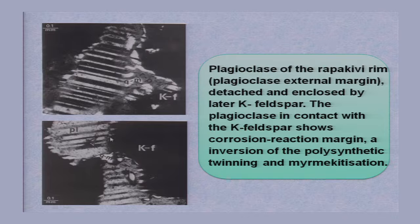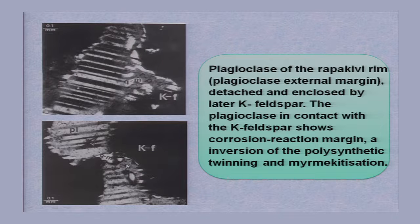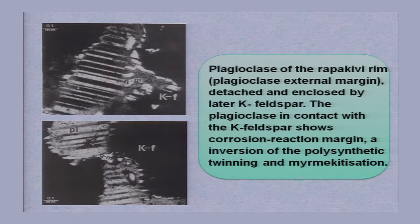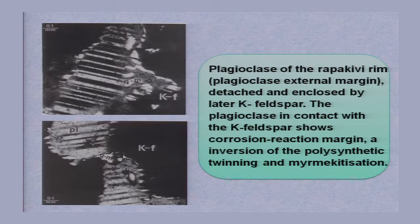Corrosion means very irregular contact — a lot of replacement has taken place, and as a result you get corrosion. There is a reaction margin with inversion of polysynthetic twinning and myrmecatization. The silicate ligand is detached from the calcium and aluminum cations, forming quartz — mostly in the form of vermicular quartz.